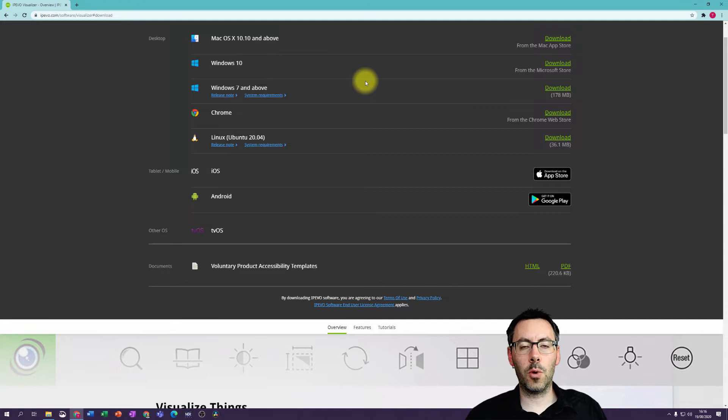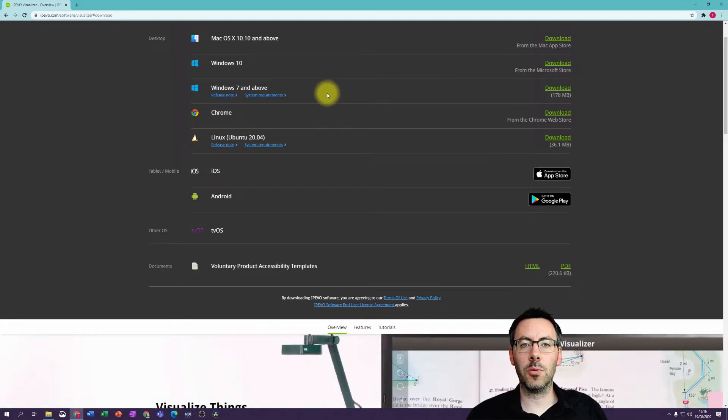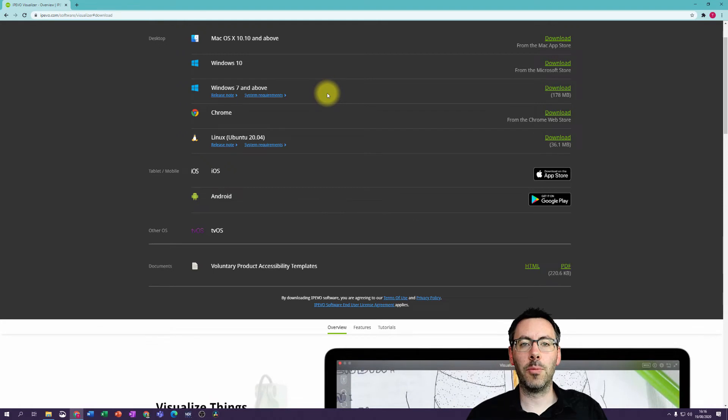If you're on Windows, you've got two options. You can either go for Windows 7 and above, which is a typical traditional program, or you can go for Windows 10, which is via the Microsoft Store. They're very similar with just a couple of minor differences, but you can choose whichever you'd like.